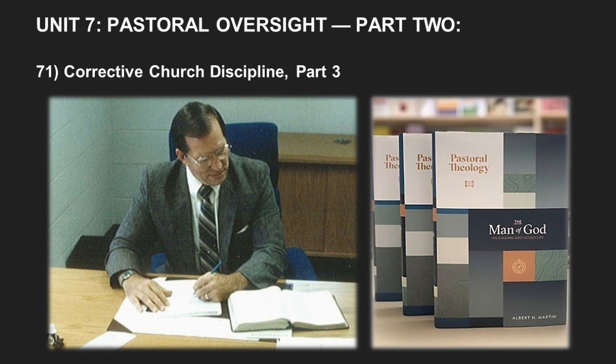'If any man named a brother be fornicator, covetous, idolater, reviler, drunkard, extortioner — don't eat with him.' Why? Because he's self-deceived — calls himself a brother. But according to chapter 6:9-11, such people shall not inherit the kingdom of God: 'Know ye not the unrighteous shall not inherit the kingdom of God? Don't be deceived — neither fornicators, nor idolaters, nor adulterers, nor effeminate, nor abusers of themselves with men, nor thieves, nor covetous, nor drunkards, nor revilers, nor extortioners shall inherit the kingdom of God.'